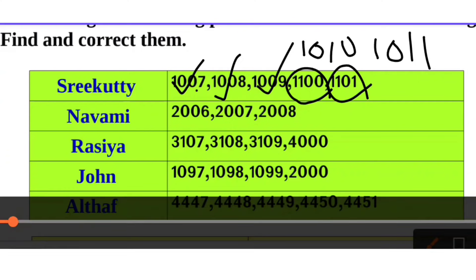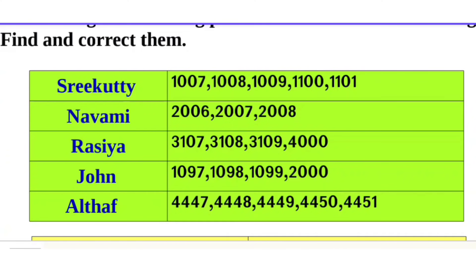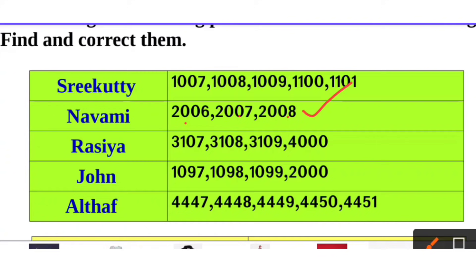Look at that — 9 and 10 — is it correct? This is 2006, 2007, 2008. This one is shaded as incorrect. But this is the correct order in line — 2006, 2007, 2008 is the correct sequence.